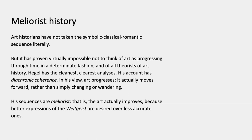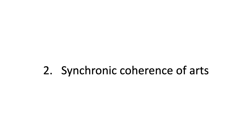Hegel's sequences are what are called meliorist. Meliorist history is one that actually improves, because better expressions of the Weltgeist are to be desired over less accurate ones — the idea is to try to express the world spirit as fully as possible in art, in religion, in law, in economics, in every aspect of culture.